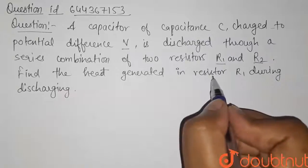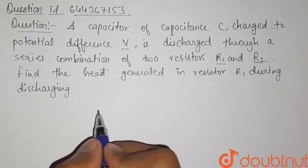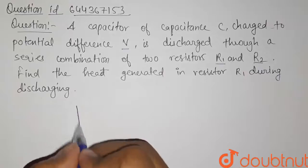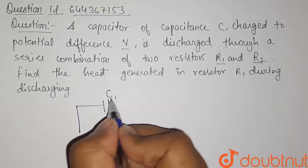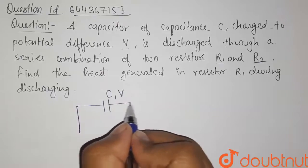Find the heat generated in the resistor R1 during discharging. So here it is given that we have a capacitor of capacitance C charged through a potential difference V.